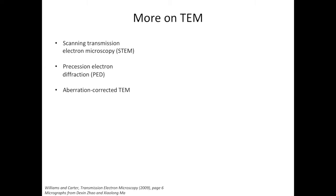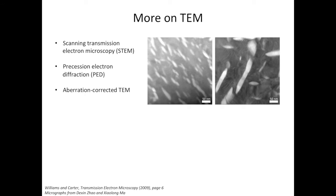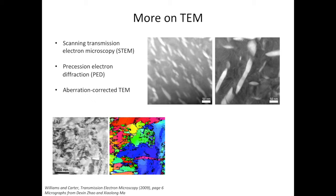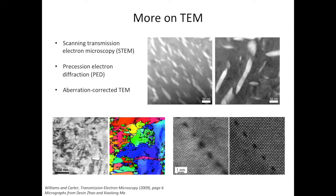In the last section, we'll introduce some TEM-related techniques. The first is scanning transmission electron microscopy (STEM) — STEM images acquired by my student De Xing highlight nano precipitates in a shape memory alloy. We'll also talk about precession electron diffraction, which can be viewed as EBSD inside TEM. Lastly, we'll discuss aberration-corrected TEM. Comparing images with and without aberration correction, you can see the difference straight away.